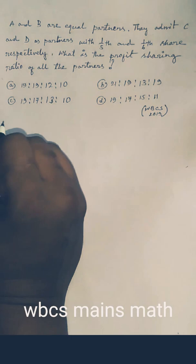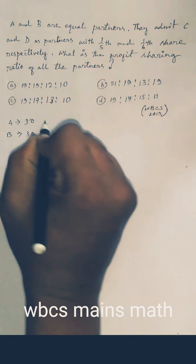A's share is T-dish, B's share is T-dish. Total share is T-dish.